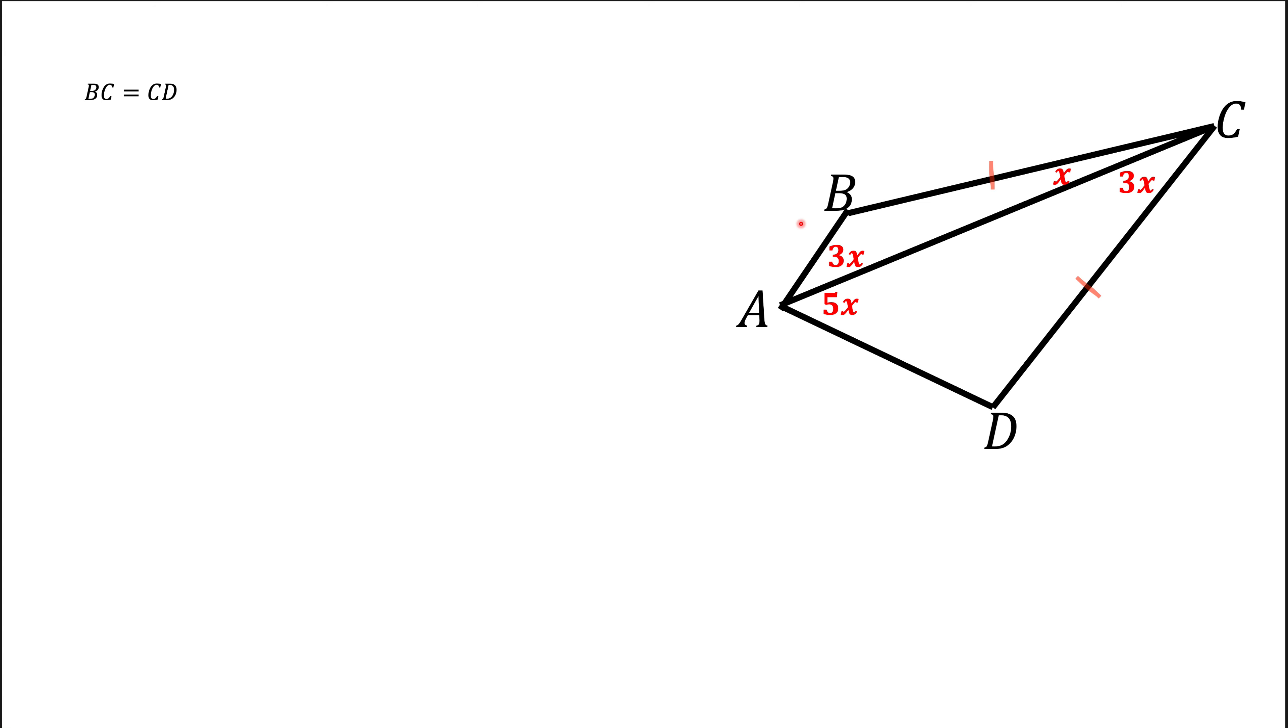Here we have convex quadrilateral ABCD with diagonal AC. Now what we know is that side BC equals side CD, and we also know the values of all the angles up to a value of x, and we are asked to find that x.